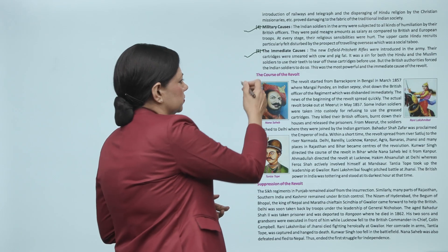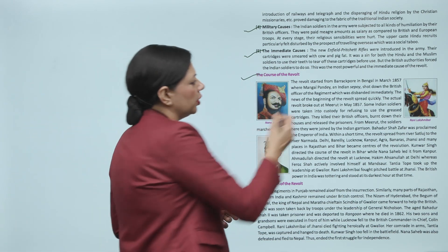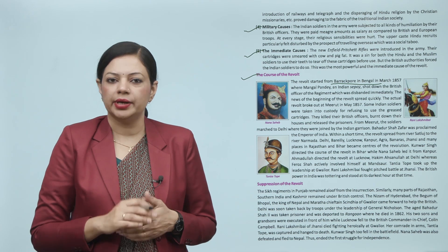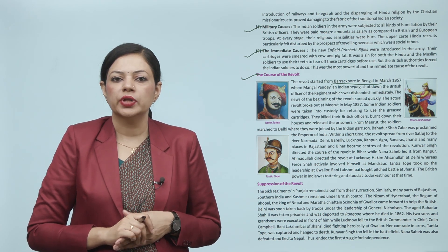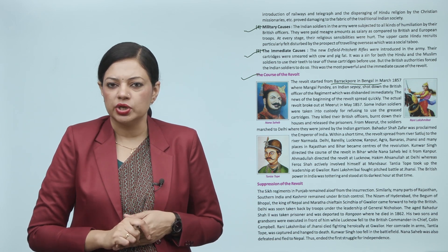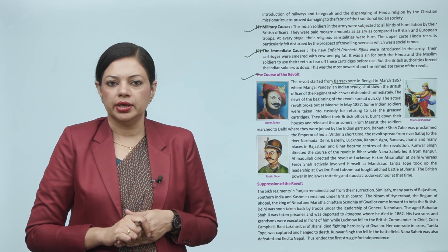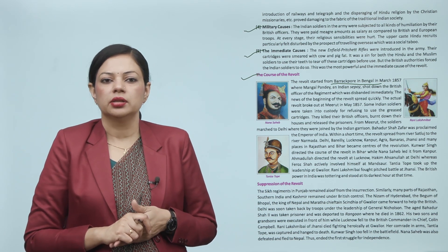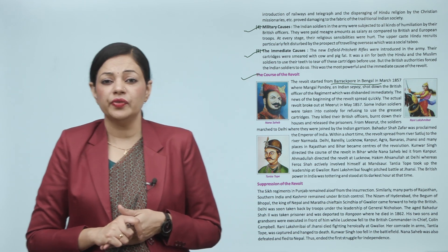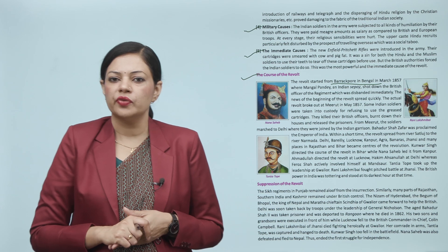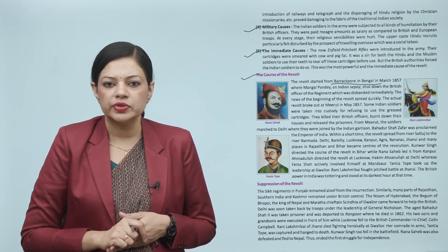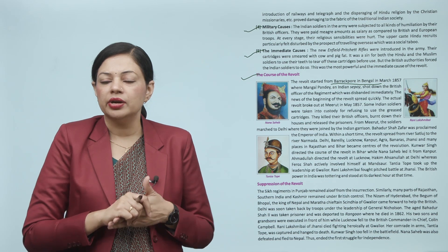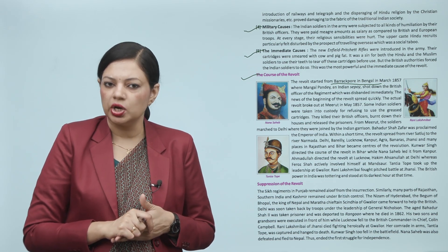The revolt started at Barrackpore in Bengal in March 1857, where Mangal Pandey, an Indian sepoy, shot down the British officer of the regiment. The regiment was disbanded immediately, and news of the beginning of the revolt spread quickly. The actual revolt broke out at Meerut in May 1857. Some Indian soldiers were taken into custody for refusing to use the greased cartridges. They killed their British officers, burned down their houses, and released the prisoners.